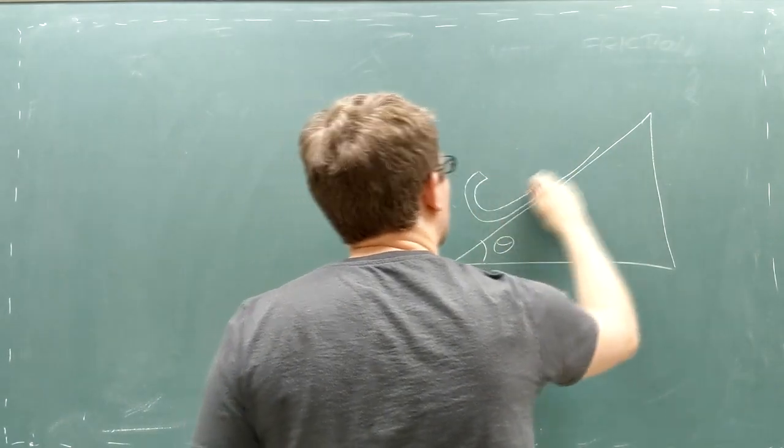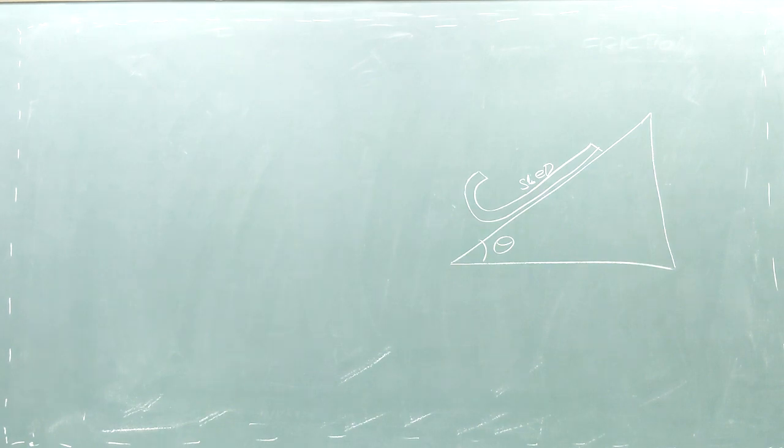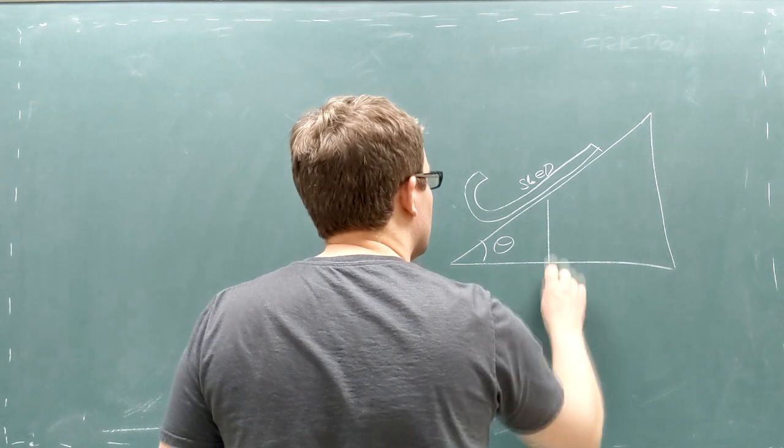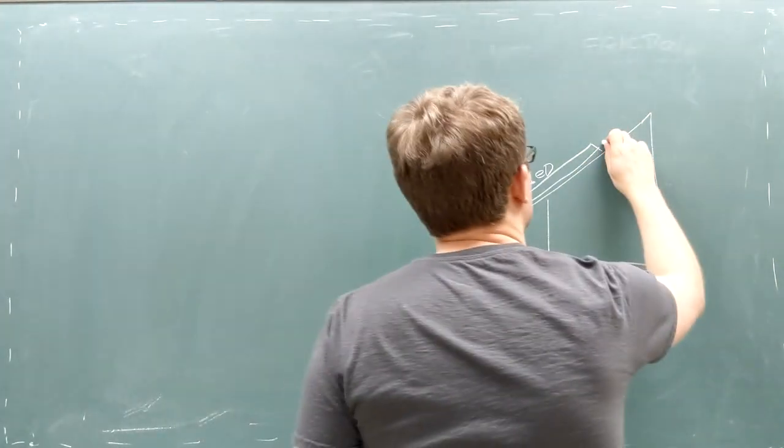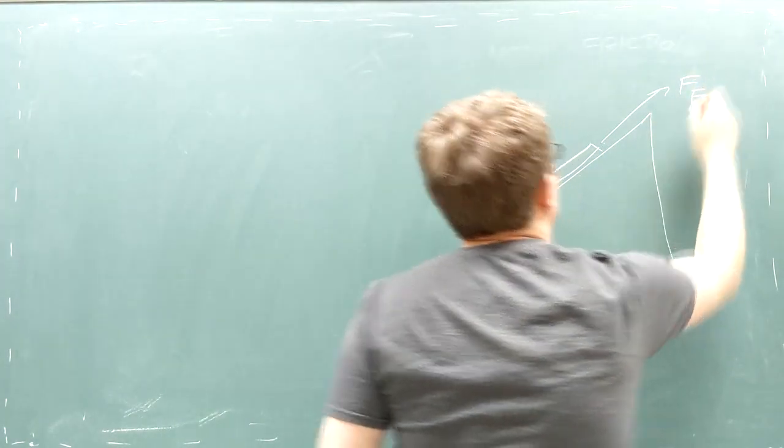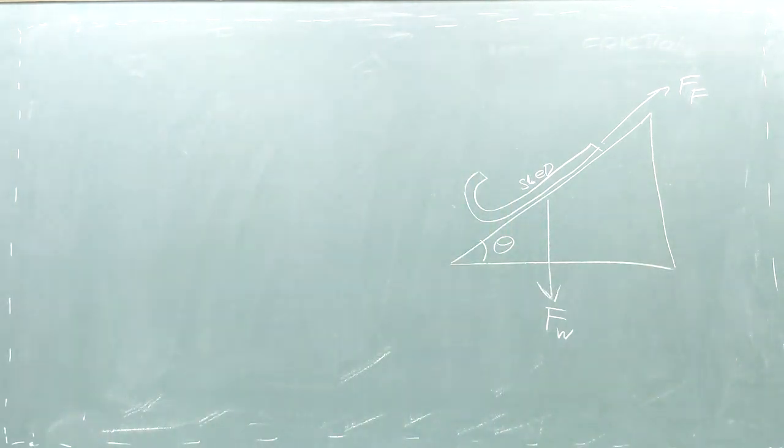Suppose you're riding a sled down a snowy hillside. There are three forces acting on the sled. First is the combined weight of the sled and you pulling downward. Second is the friction force pulling the sled backward along the hillside. And finally,